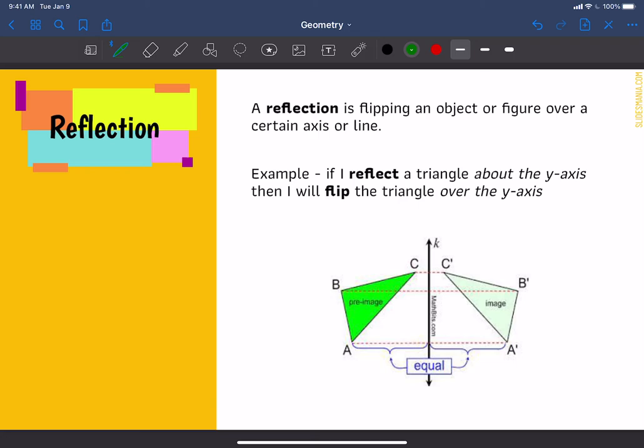A reflection is basically you flipping an object over a certain axis or line. So depending on what your question asks, you can be asked to flip it over the y-axis, you can be asked to flip it over the x-axis, you can be asked to flip it over the line y equals x.